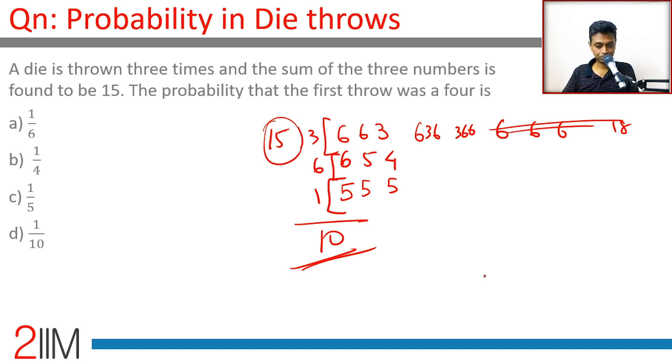Out of this, the probability that the first throw was a 4. Not here, not here, only here could it have been 4. It could be 4, 5, 6 or 4, 6, 5. Out of the 10 outcomes, 2 work for us, so we are looking at 1 by 5.